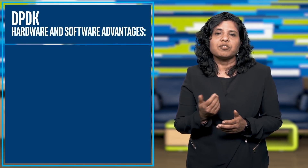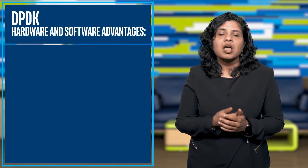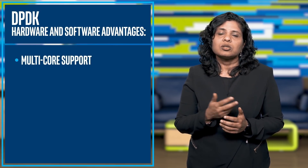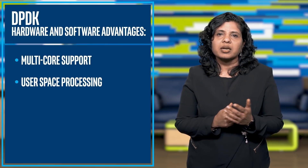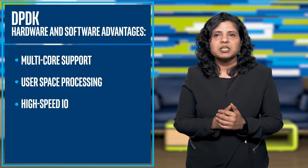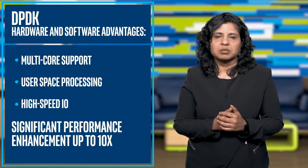DPDK is a set of libraries and drivers for fast packet processing. You can convert a general purpose processor into your own packet forwarder without having to use expensive custom switches and routers. Using hardware and software architecture advantages like multi-core support, user space processing, and high-speed I/O, DPDK is able to provide a significant performance enhancement.